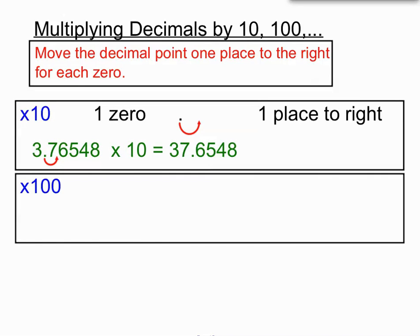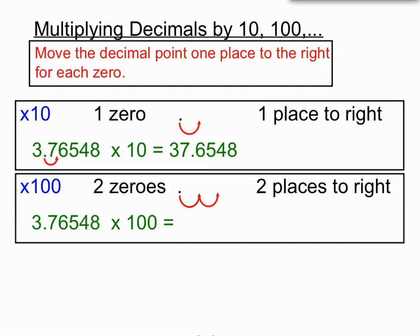If we're multiplying a decimal by 100, 100 has two zeros, so we're going to move our decimal point two places to the right. Here's the same number we started with, but this time we're going to move two places to the right. Our final answer is 376.548. We've moved across one place for every zero in the number we're multiplying by.